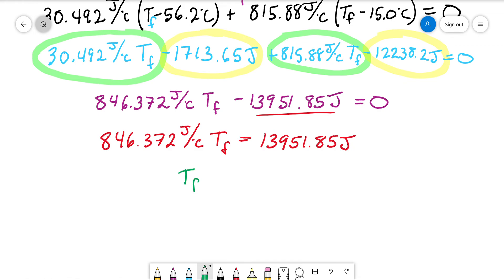Now we just divide. And T final is equal to, and by the way, when you divide, your joules are going to cancel out. The 1 over Celsius gets flipped over, so we get degrees Celsius, which is what we're looking for. 16.5 degrees Celsius. That's our final answer.